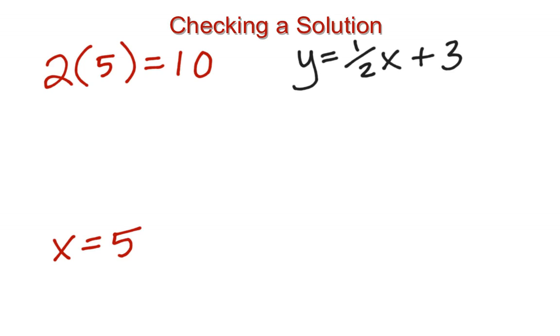A solution then would be any value that I could substitute in place of the variables, and those wouldn't need to be the same thing since x and y are different variables. But values that I can substitute in place of the variables, simplify the expressions on either side of the equation, and come up with something that is a true statement, where those numbers actually do equal each other.